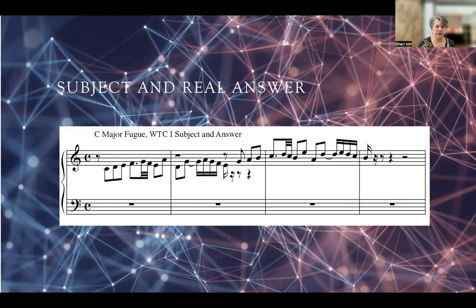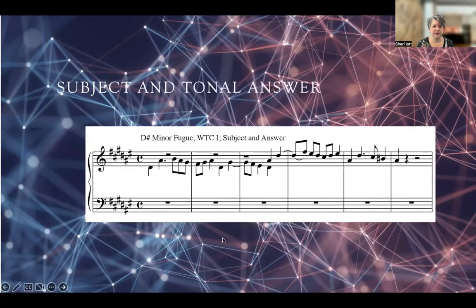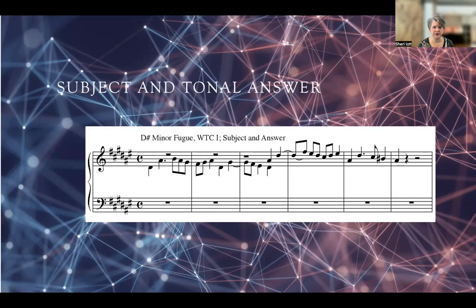What happens next is another statement of the subject — we'll follow that whole form through in just a moment. We also often have, instead of a real answer, a tonal answer. This will often happen when the subject is either very stressful of the dominant or moving towards the dominant at the end. You'll notice the answer starts on the fifth as we would expect, but then because it's starting on the fifth, we're going to go up a fourth instead of a perfect fifth, and then a third, and now we've regained our contour. That is what we would call a tonal answer.